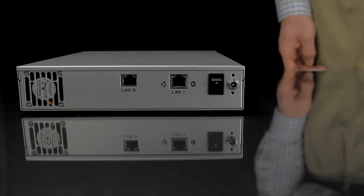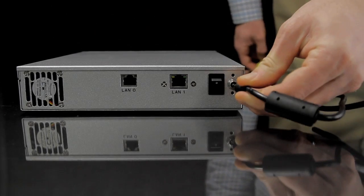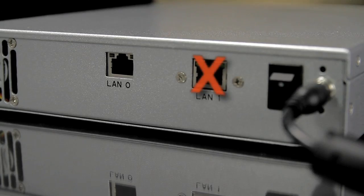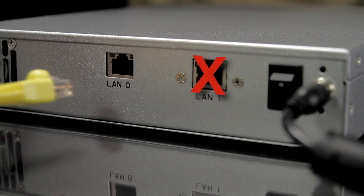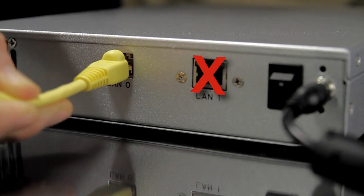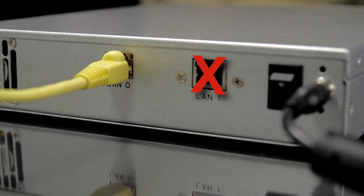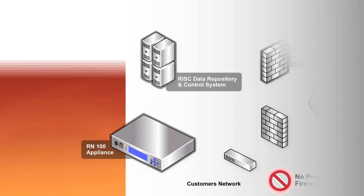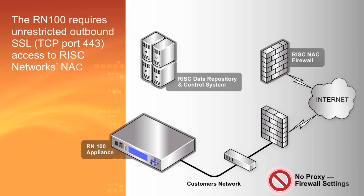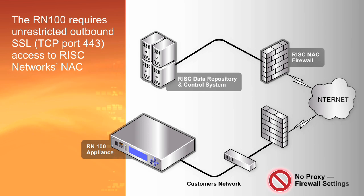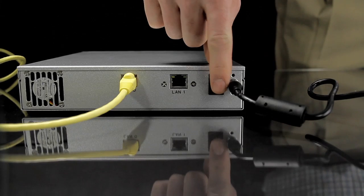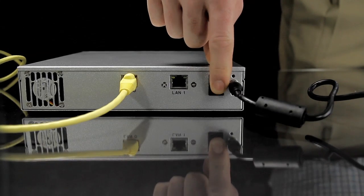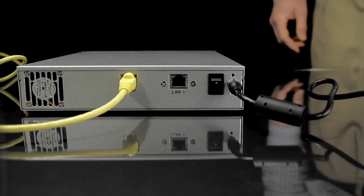Connect the power supply to the input on the back of the RN100. Insert an Ethernet cable into LAN 0 on the back of the RN100 and the other end to your network. The RN100 requires unrestricted outbound SSL-TCP port 443 access to Risk Network's NOC for proper functionality. Boot up the RN100 with the power switch on the back of the appliance.